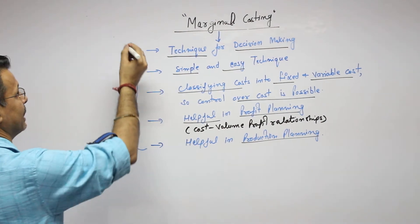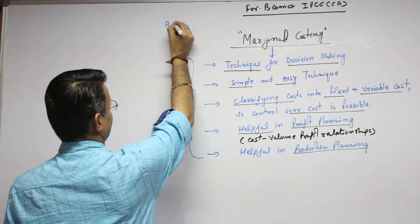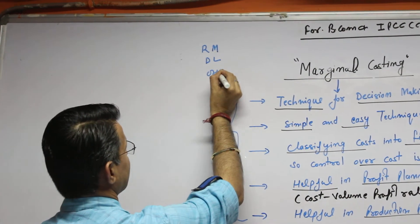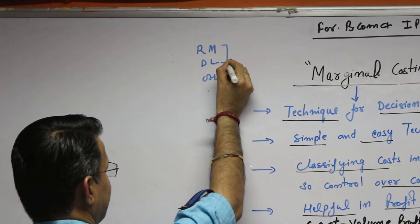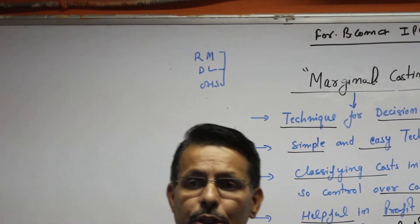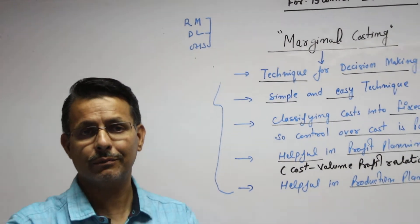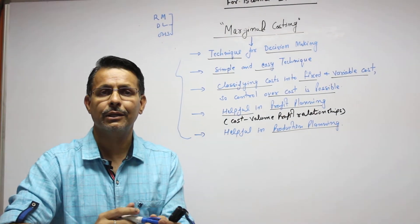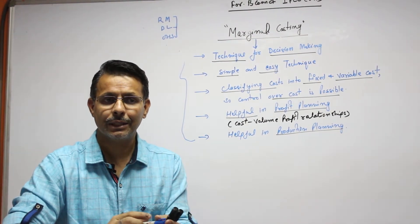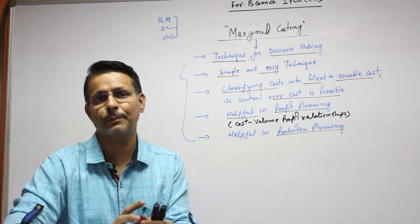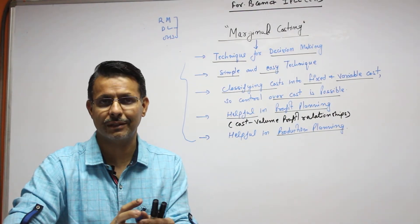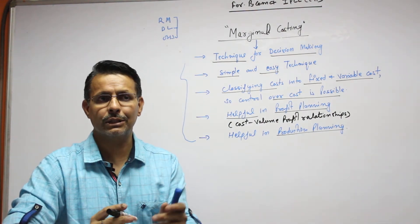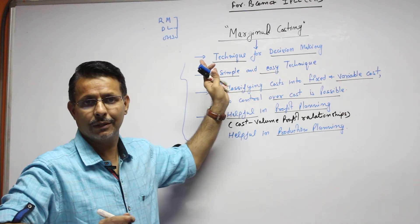Basic elements of cost are: raw material, direct labor, and overheads. These are the basic elements of cost. We have already discussed all the elements of cost, and the basic cost per unit is the fundamental concern.